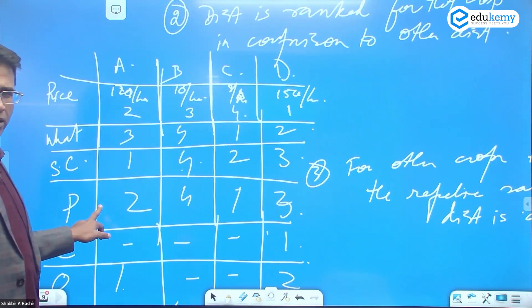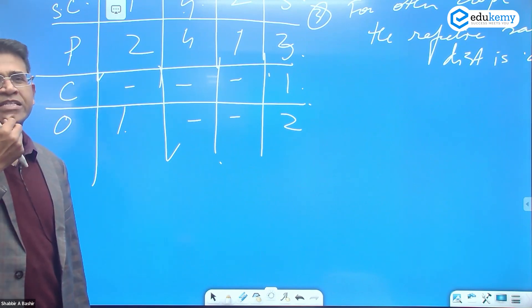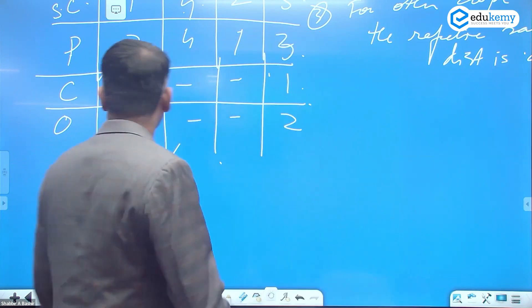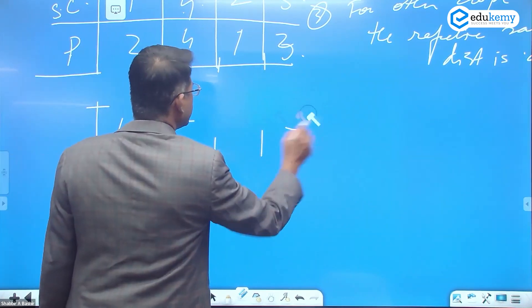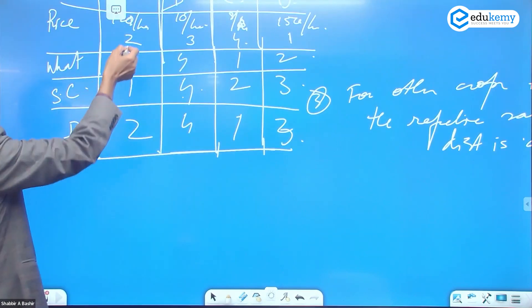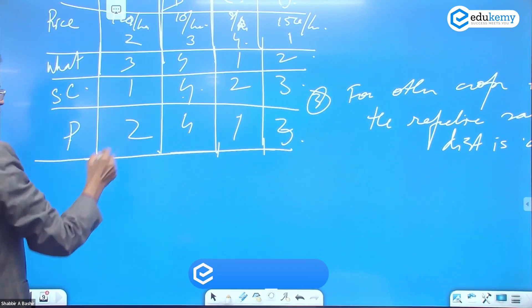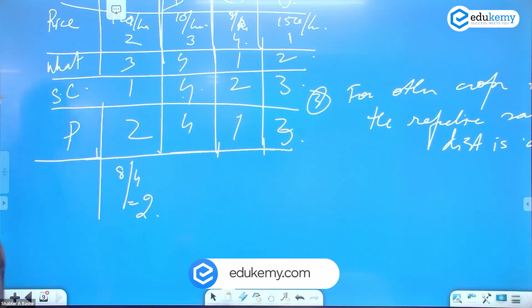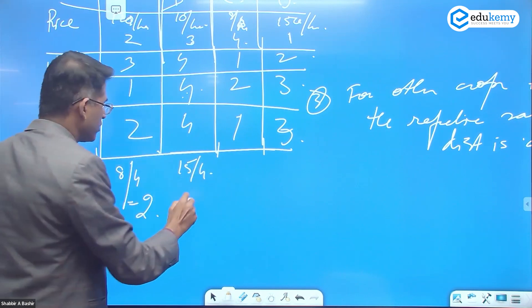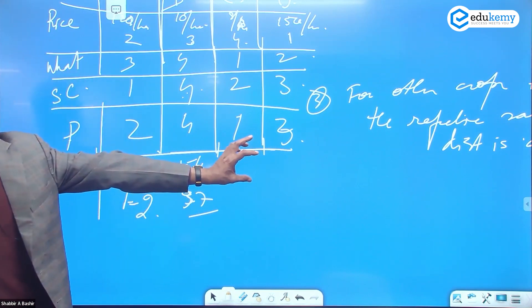Next, what's done is the average ranks of the districts are calculated. Generally, the average rank is calculated. For example, 2 plus 3 is 5, 6, 7, 8. This is rank 8 divided by 4, which is 2. You have 7, 11, 15 divided by 4, that's 3 point whatever. You find out the average rank of each district.